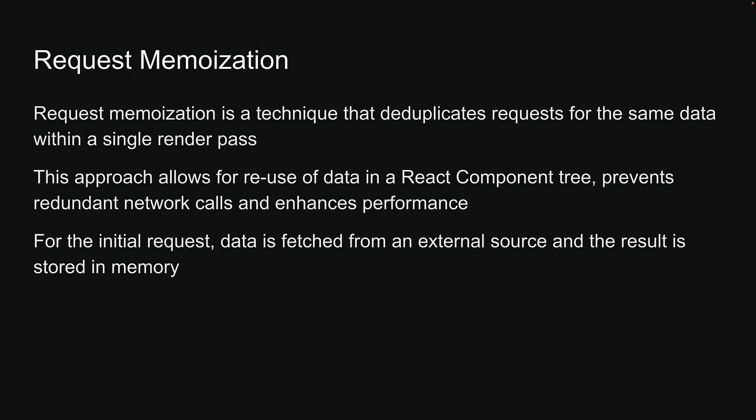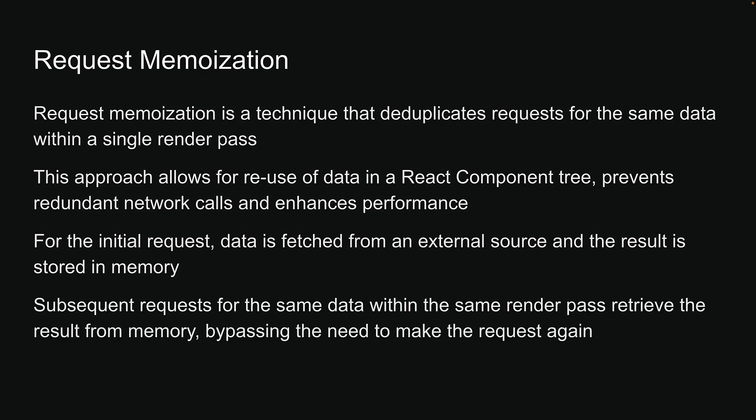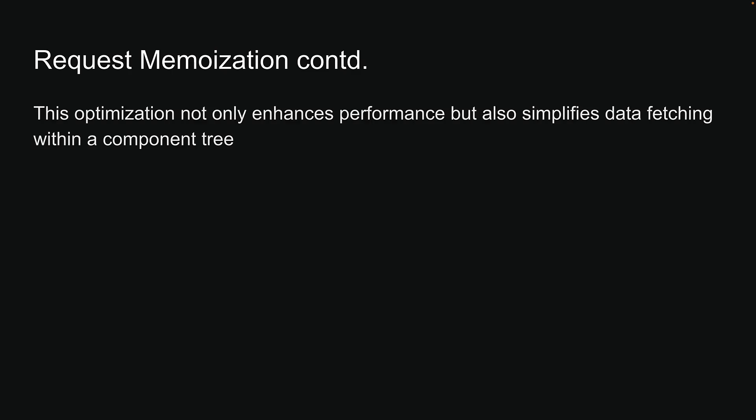For the initial request, data is fetched from an external source and the result is stored in memory. Subsequent requests for the same data within the same render pass retrieve the result from memory, bypassing the need to make the request again. This optimization not only enhances performance but also simplifies data fetching within a component tree.